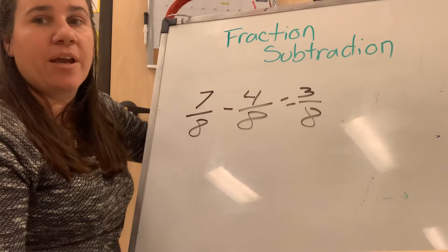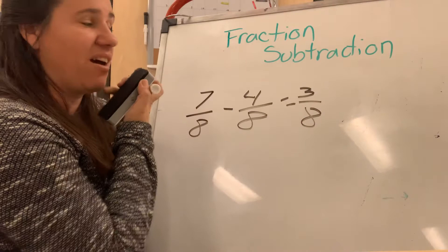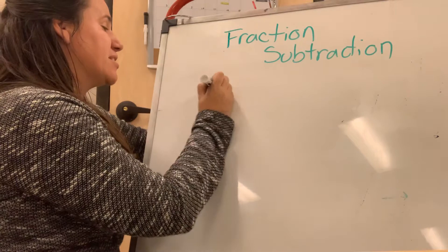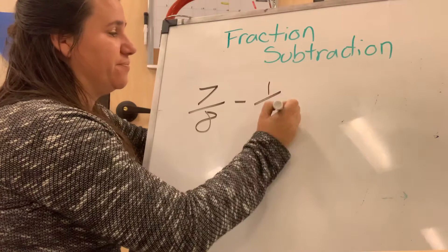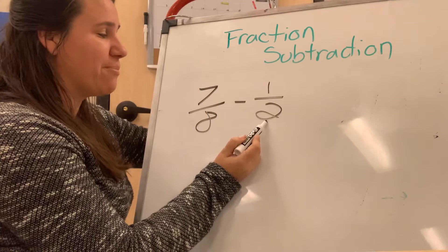The next step, if we were kind of stepping up in difficulty, would be if we had a denominator that was not the same. So let's say that I had seven-eighths. And this time I was subtracting a half. So I can't subtract right away because my denominators are not the same. So I need to find like denominators.